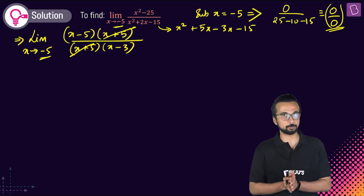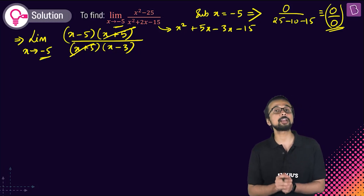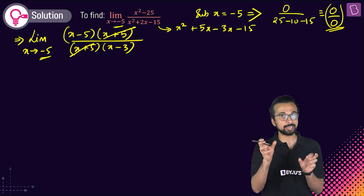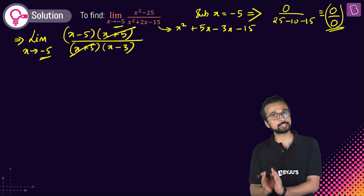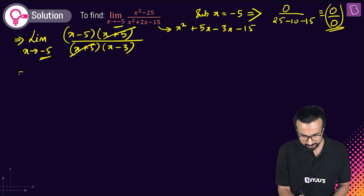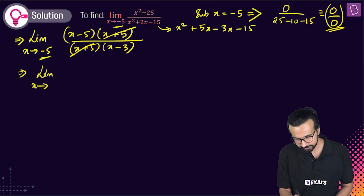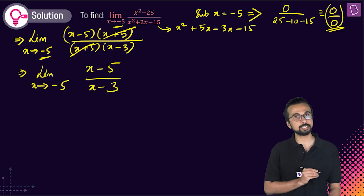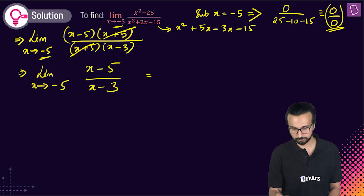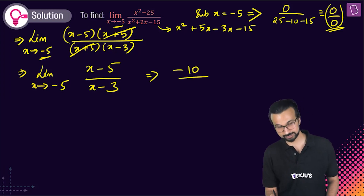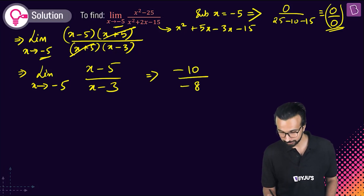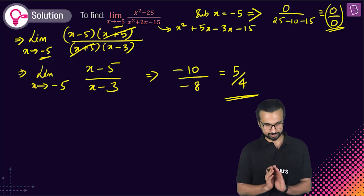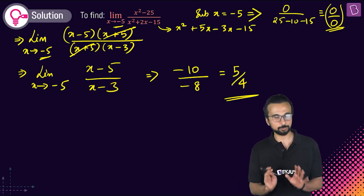By canceling (x+5), we've removed the cause of the zero by zero form. Now we have limit x tends to -5 of (x-5)/(x-3). Substituting: (-5-5) / (-5-3) = -10 / -8 = 5/4.